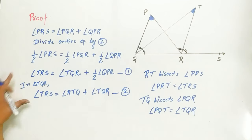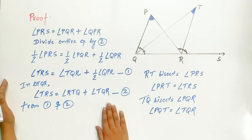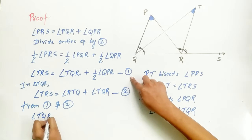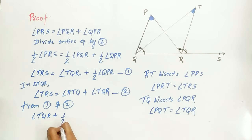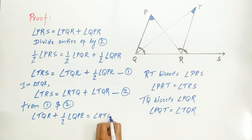Now, from equation 1 and equation 2, since left-hand side of both equations is equal, angle TQR plus half of angle QPR equals angle RTQ plus angle TQR. Now, I can cancel angle TQR.